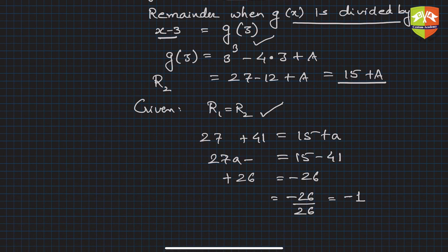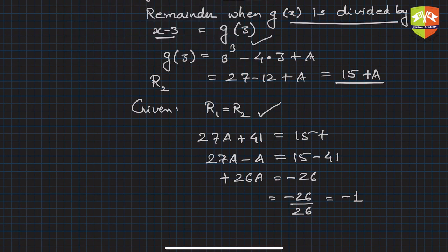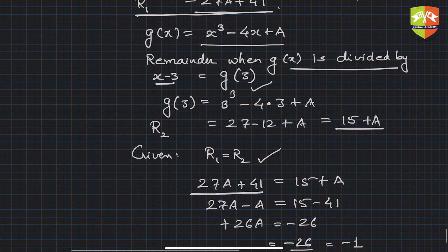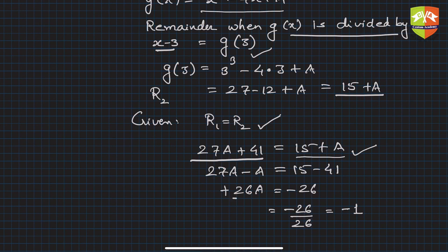I have equated R₁ = R₂, replacing with capital A everywhere. If you solve this expression, 27A + 41 was the remainder from the first division and 15 + A is the remainder from the second division. Equate both of them and solve: 27A + 41 = 15 + A, which gives A = -1.